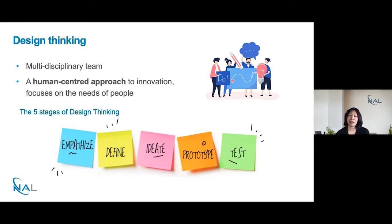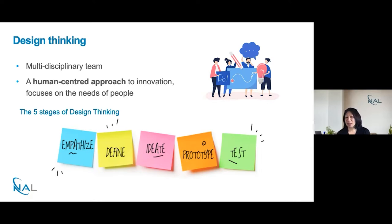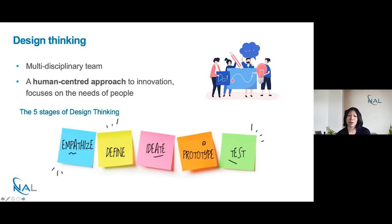The five stages of design thinking are: firstly, empathise, where we set aside our assumptions and try to gain an understanding of the user. Then we define the user needs — their pain points, their barriers, what they want to gain, or what would make a positive difference to them. Then we go into the ideate phase, the fun part where we come up with a lot of wild solutions to try and think of things to solve those problems. Then we'll choose a few of those ideas to prototype and test. This is an iterative process where we continually learn, get feedback from the user, and improve our solution. In this talk I'll cover the first two phases.